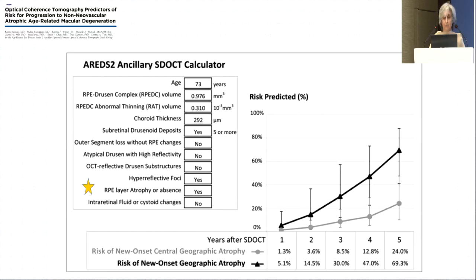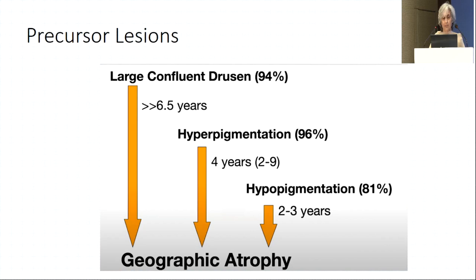The AREDS2 ancillary SD-OCT sub-study calculator for risk of AMD showed one single factor important for both new onset central atrophy and new onset geographic atrophy: the presence of RPE layer atrophy. If it was present at the start of the study, the risk of atrophy was higher than if it was absent. These are the known precursor lesions.